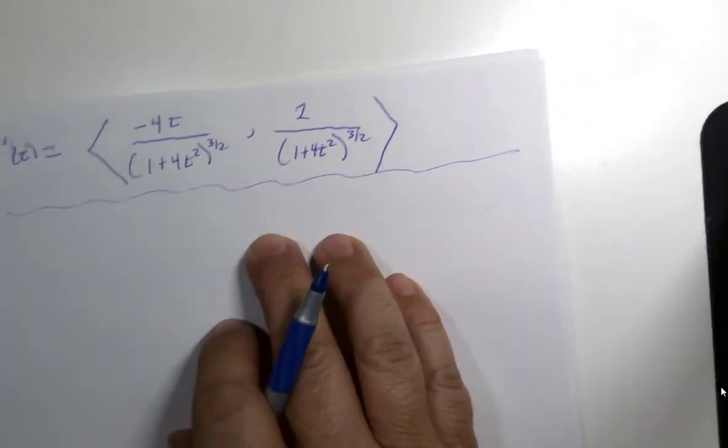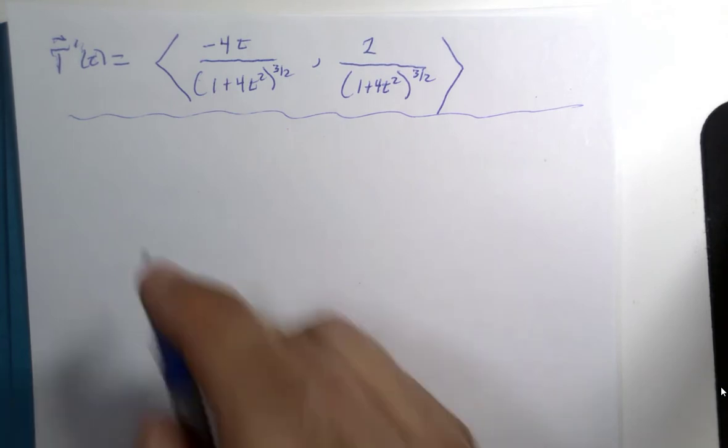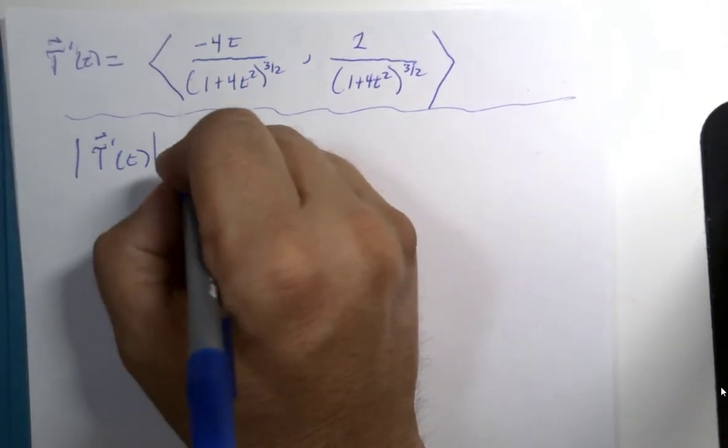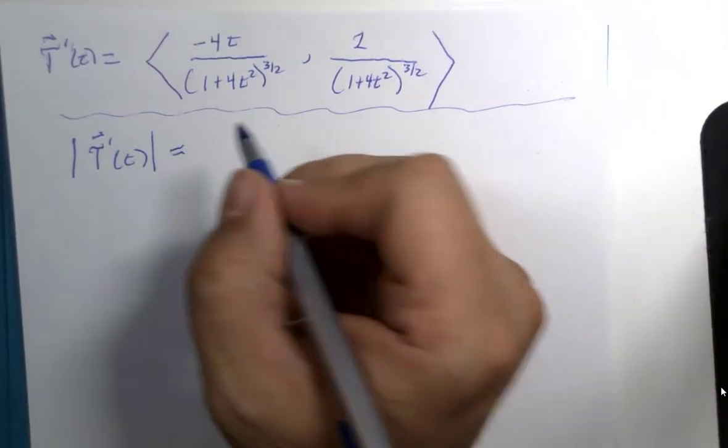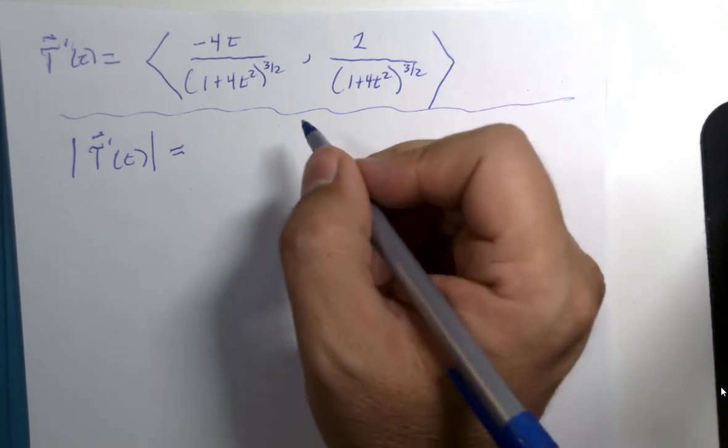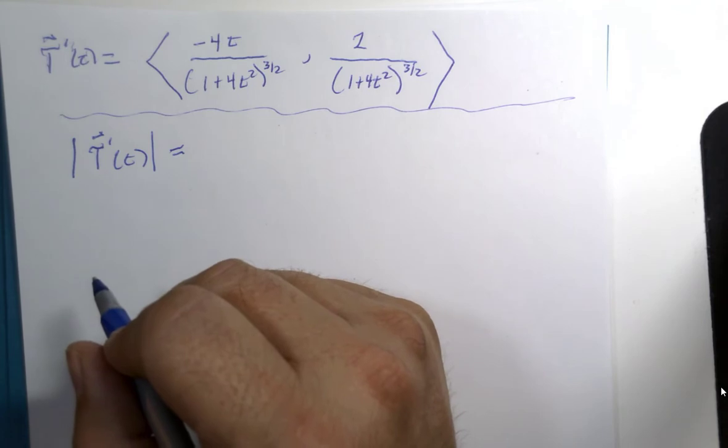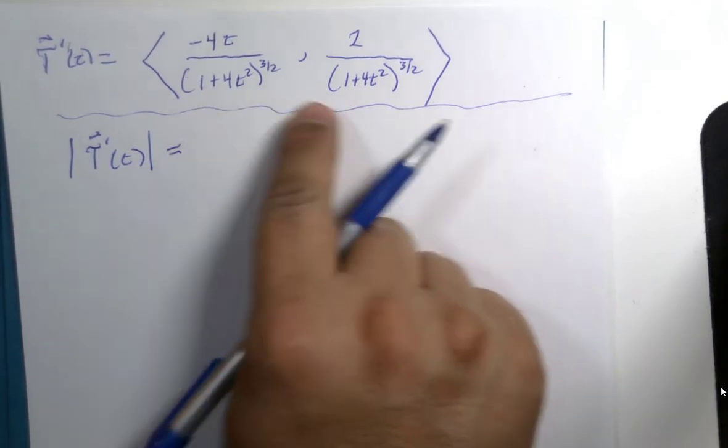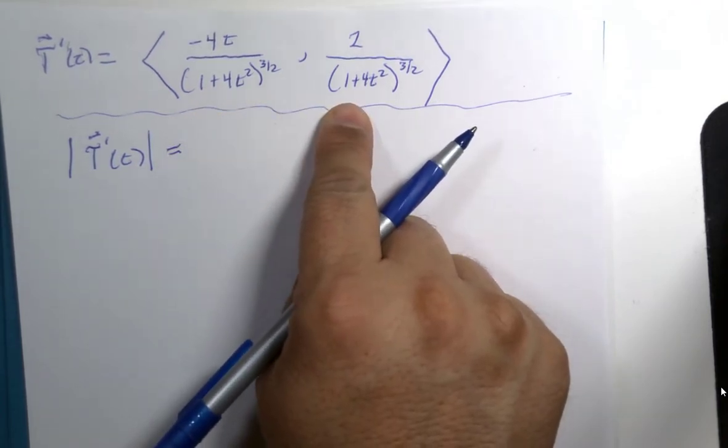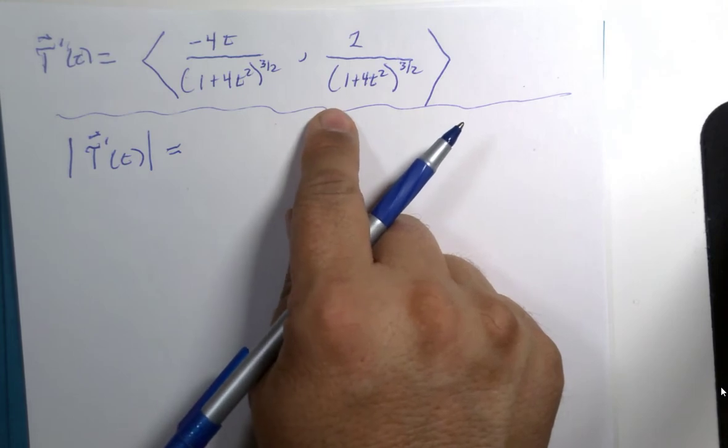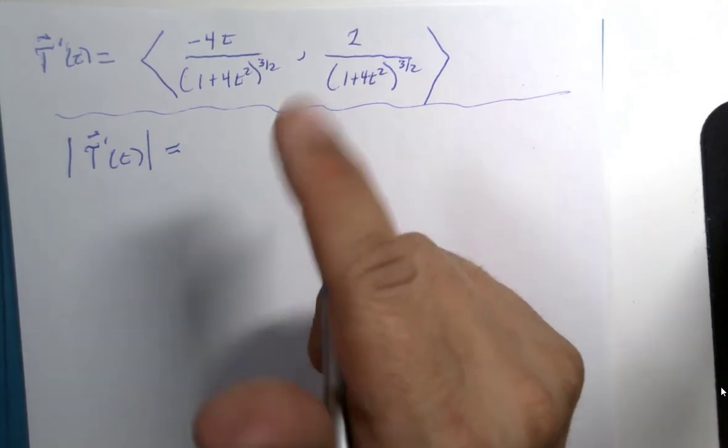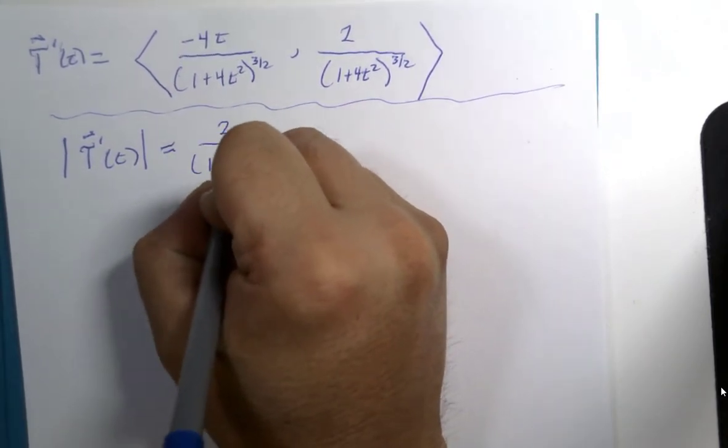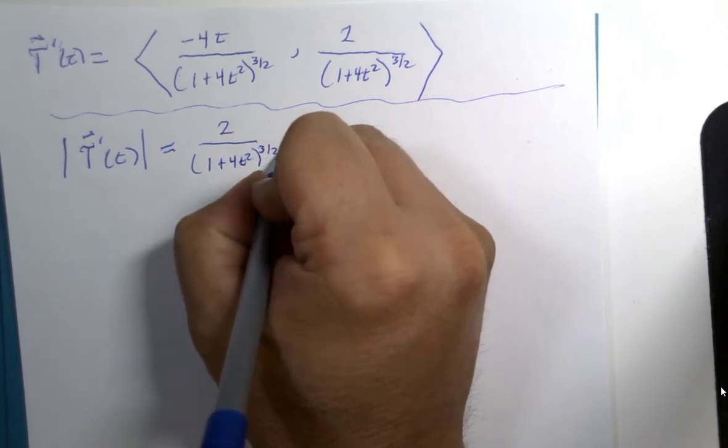So now we're going to find the magnitude of T prime. That is going to be done several different ways, but I would like to pull out one of those facts from when we started learning about vectors. If you can pull out a scalar, you can very much simplify this calculation. So the scalar would be any common factor, so I could factor out a 2 from the numerator, and 1 plus 4t squared to the three halves in the denominator.